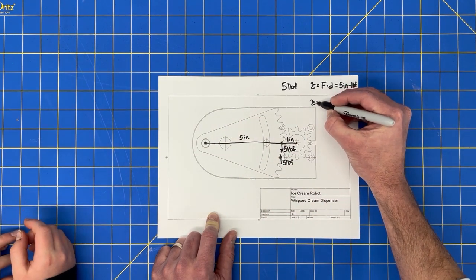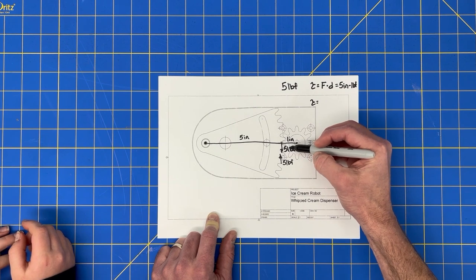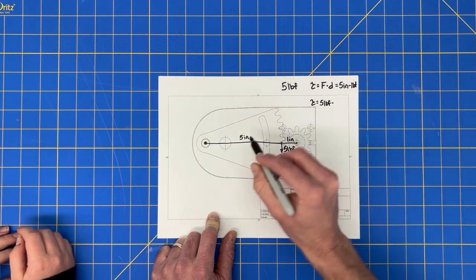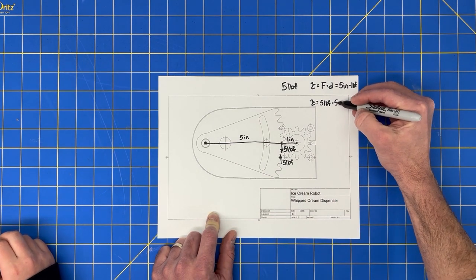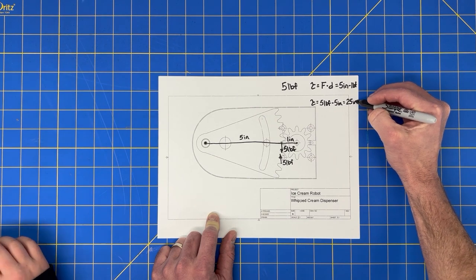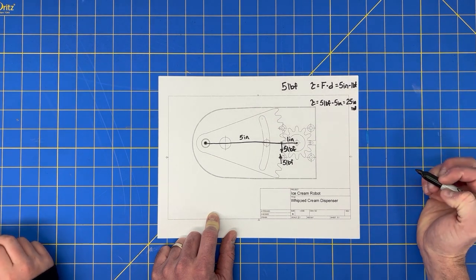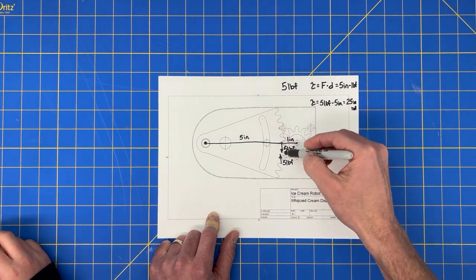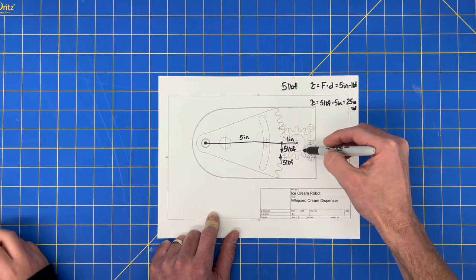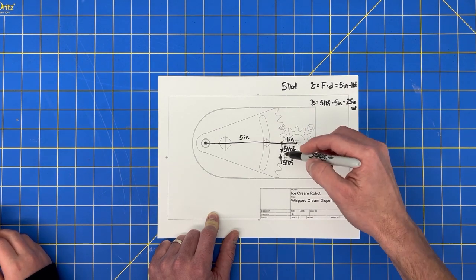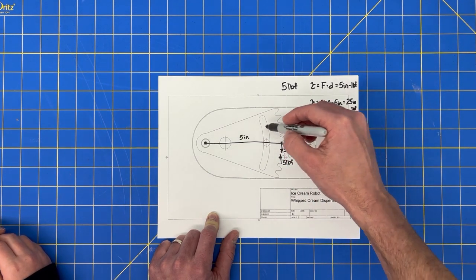And so remember, if torque is force times distance, what's the torque on this gear if we recalculate it? So we have torque equals 25, right? Because we have five pounds times a much larger distance, five inches, equals 25 inch pounds. And we're not getting something for nothing.